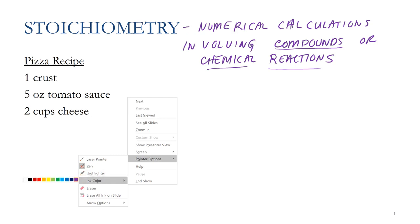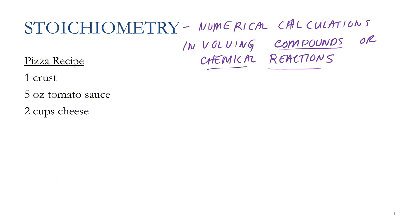So what do we mean by calculations involving chemical reactions? A good analogy often used with stoichiometry is that of cooking or baking. One analogy I often use is making pizza. Here's a simple pizza recipe: we get a crust, some sauce, and some cheese — put those together, bake them, and you get a pizza.